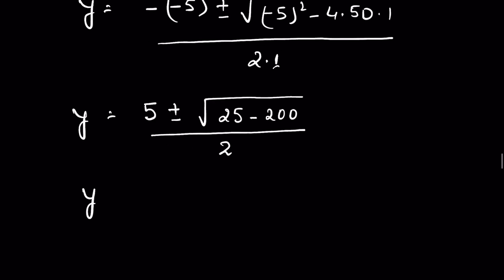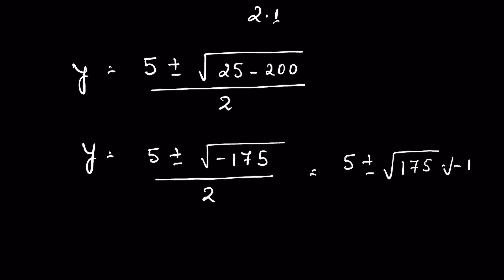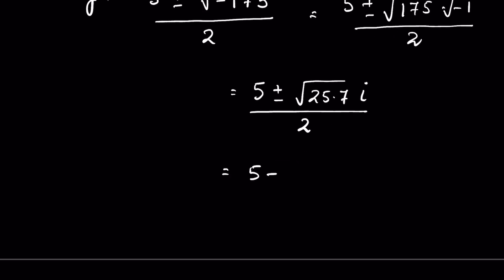So y equals 5 plus or minus the square root of minus 175, over 2. We can write this as 5 plus or minus the square root of 175 times the square root of minus 1, over 2. Since the square root of minus 1 is the imaginary unit i, we write i for it.